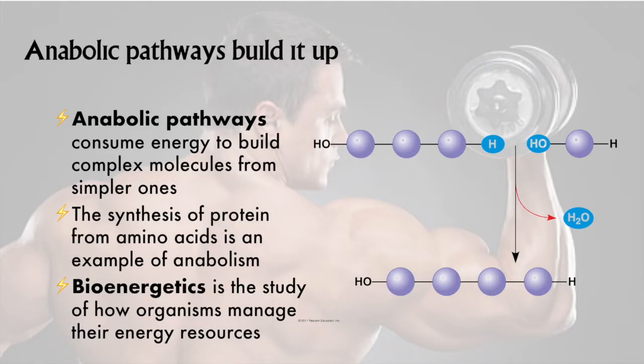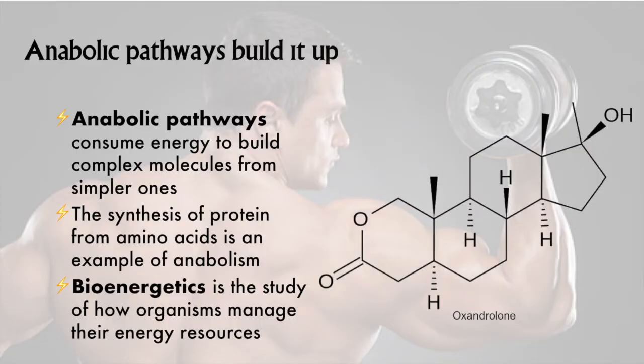Anabolism is the opposite. Anabolic pathways build complex molecules from simpler ones. To do this, anabolic pathways require an input of energy, just as we saw with moving molecules against their concentration gradient in the previous chapter. Dehydration synthesis is an anabolic process. You may have heard of anabolism before, or of compounds known to assist in this process. Here, once again, is oxandrolone.